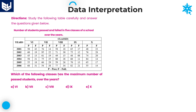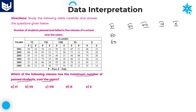Next question: Which of the following classes has the maximum number of passed students over the years? You need to calculate from class 6 to class 10. First, calculate class 6 passed students over all the years: 50, 60, 45, 58, 55, 68.